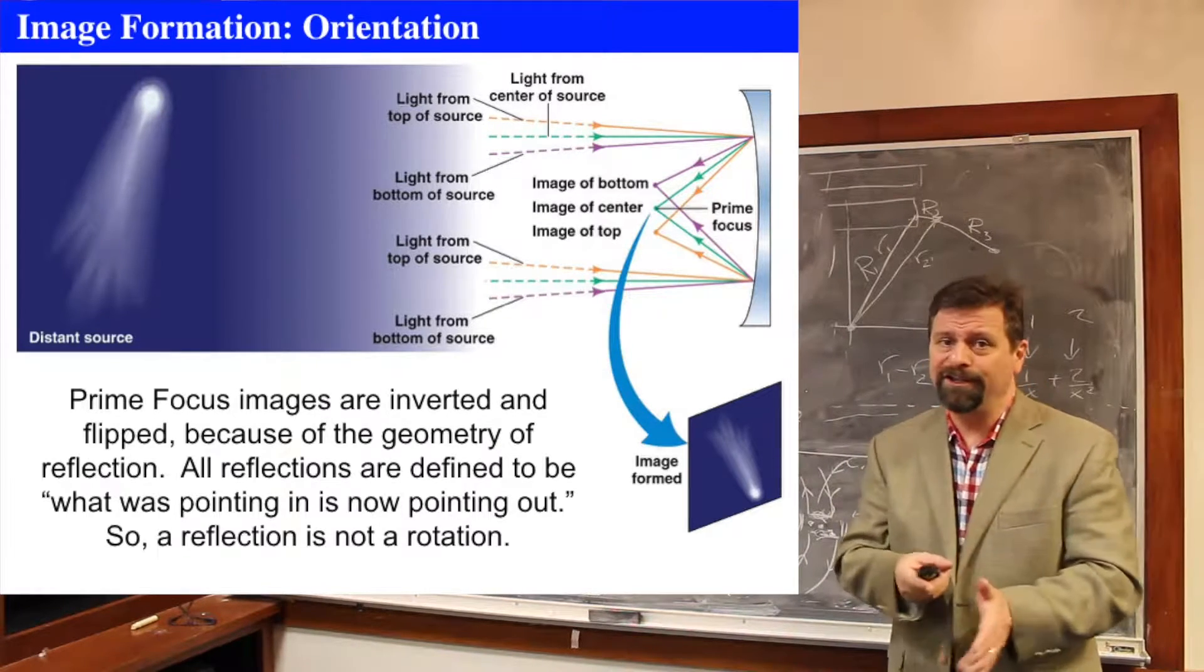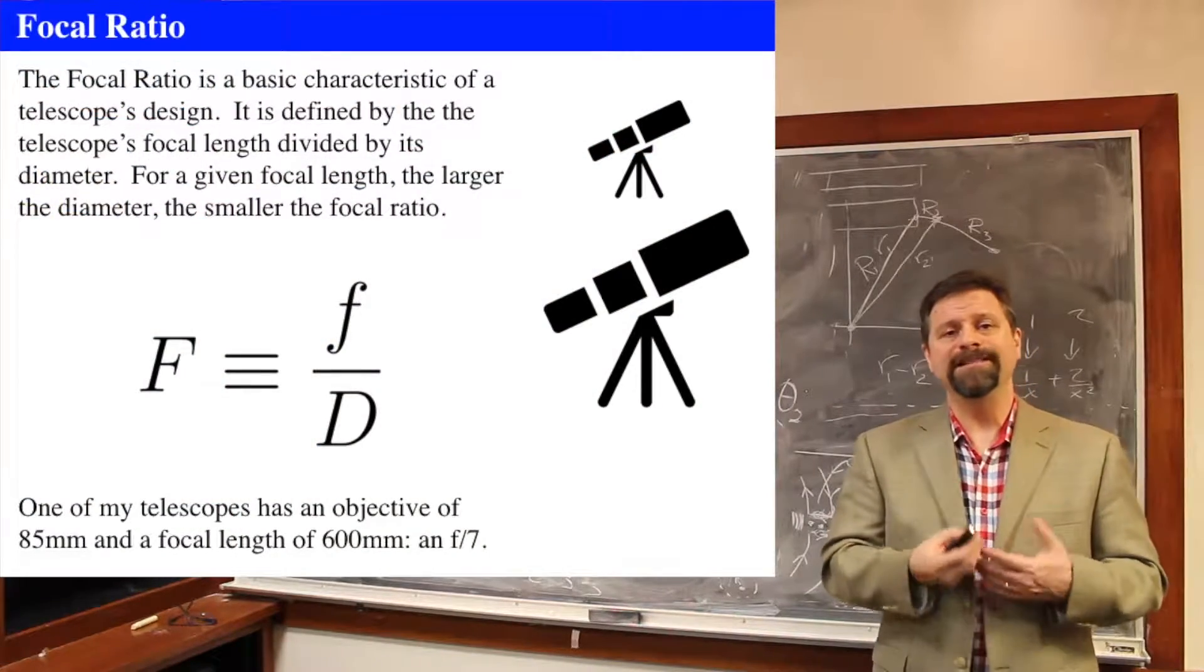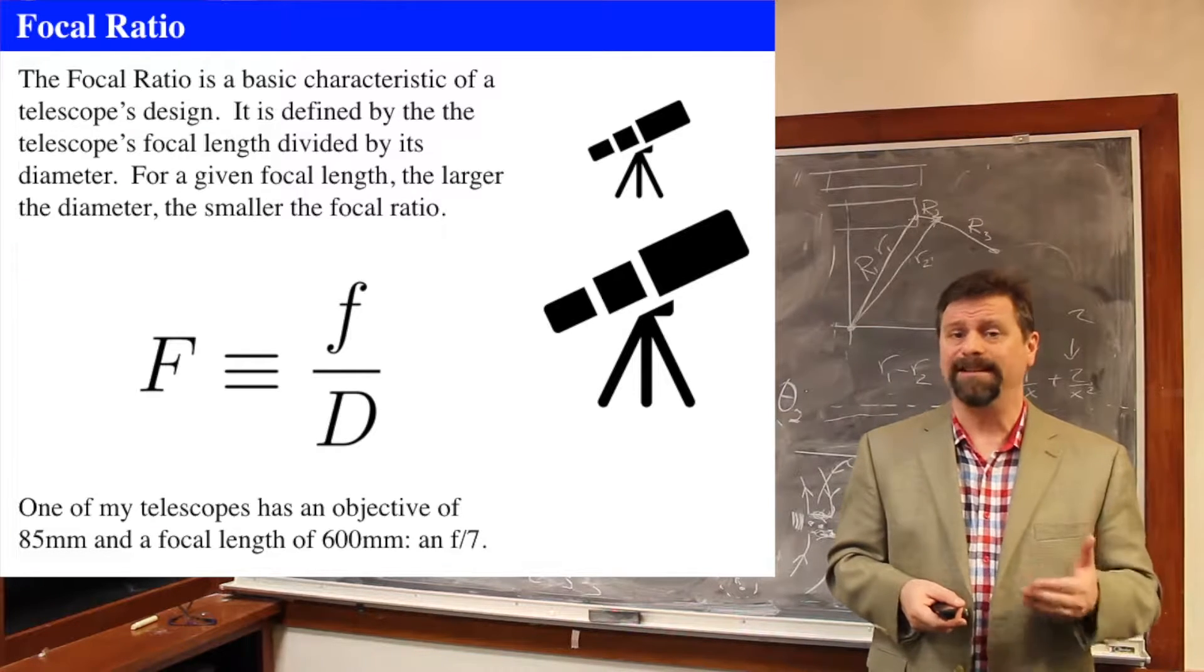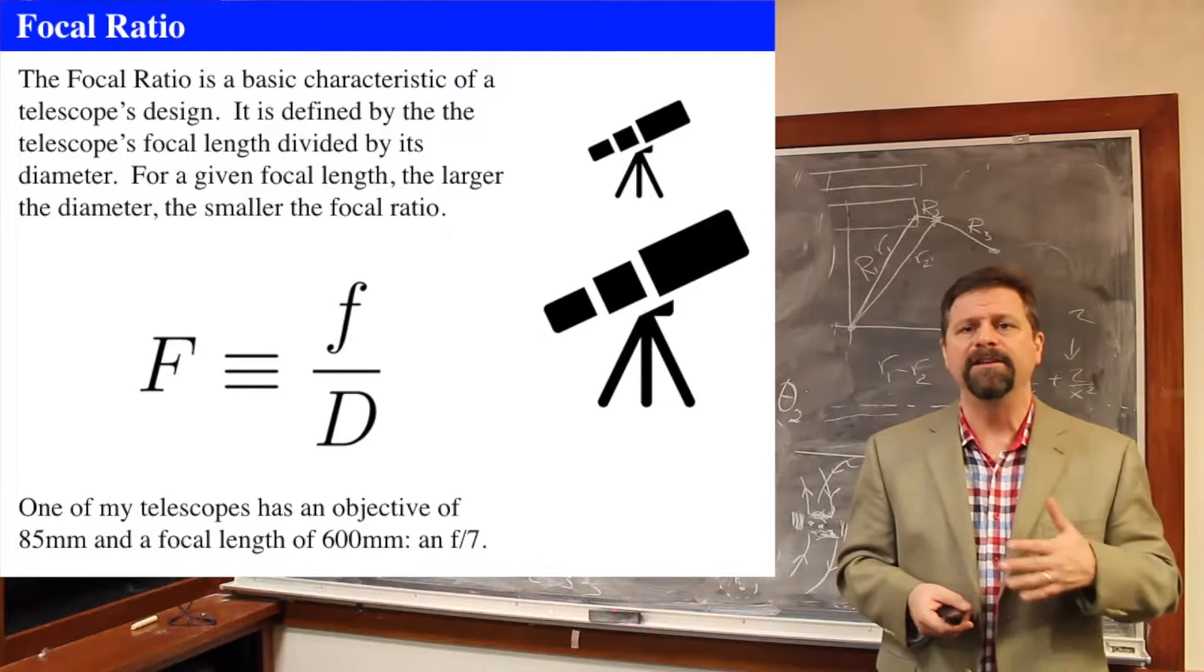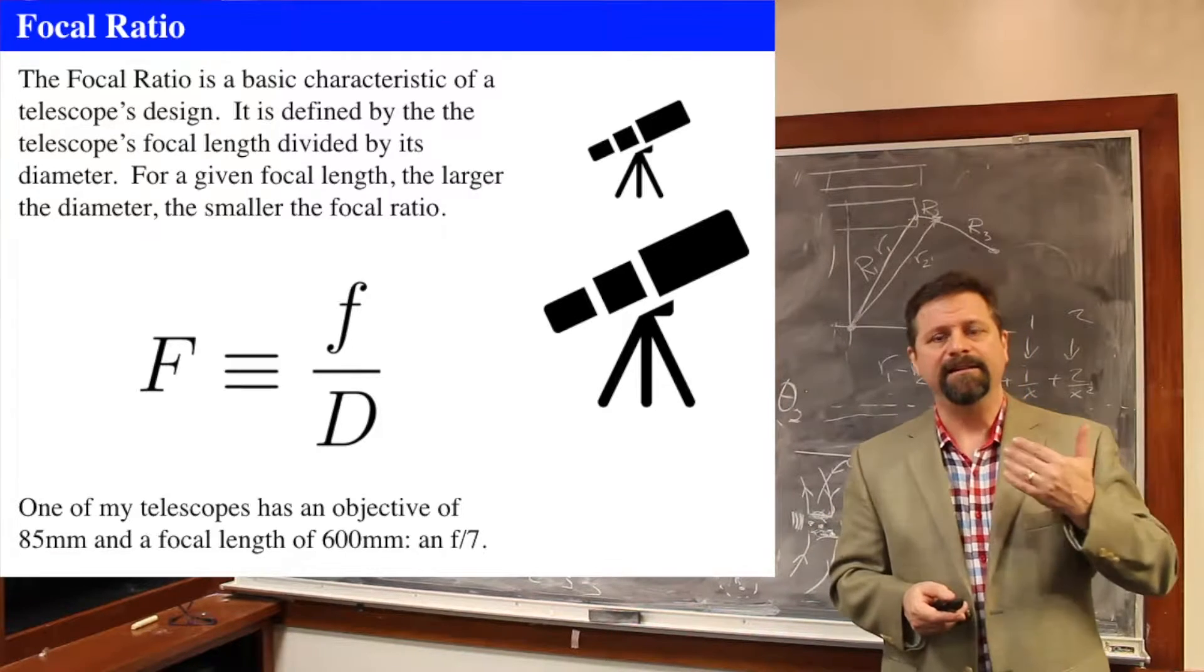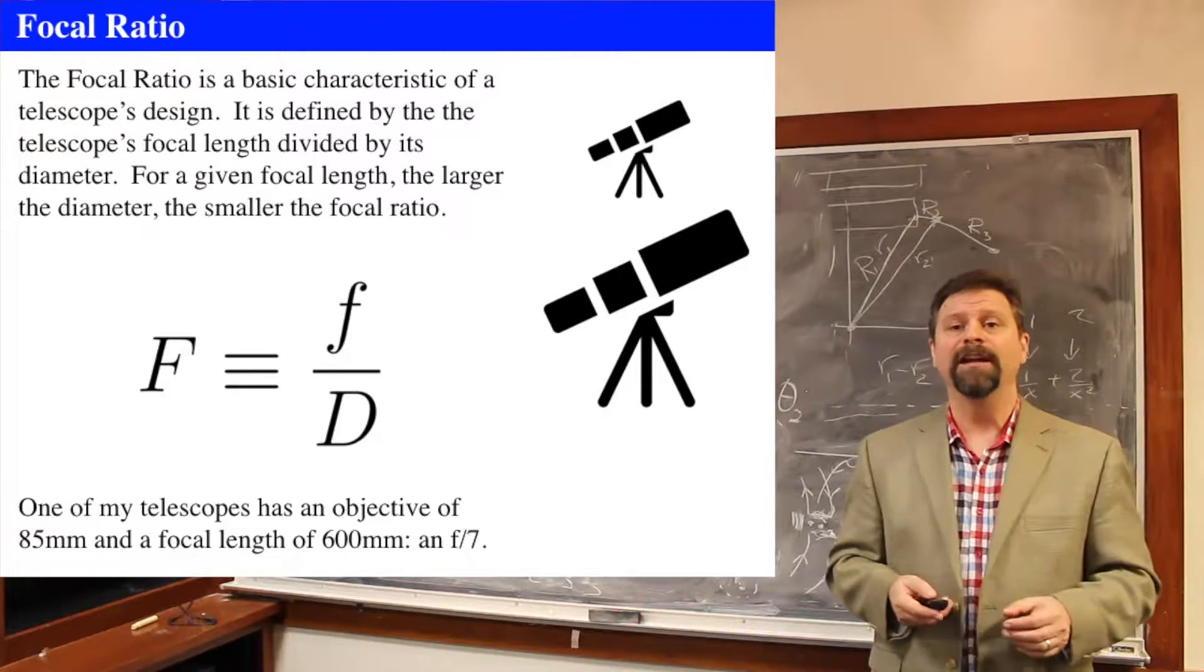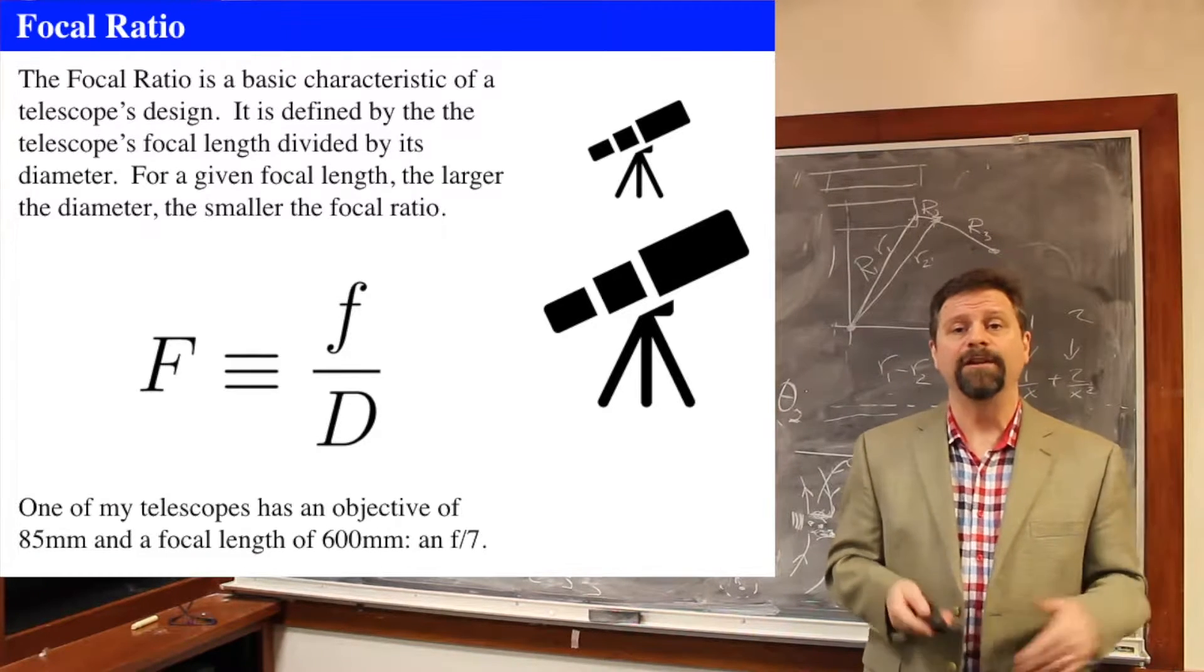But more important than the orientation is a characteristic of a telescope called the focal ratio. The focal ratio is a primary characteristic of every telescope's design. It's defined to be the focal length of the objective or primary divided by the diameter. So that's called the focal ratio, the focal length divided by the diameter. One of my telescopes that I own has an 85 millimeter diameter and has a focal length of 600 millimeters, and so I'll call that a focal ratio of seven or an F7 telescope.